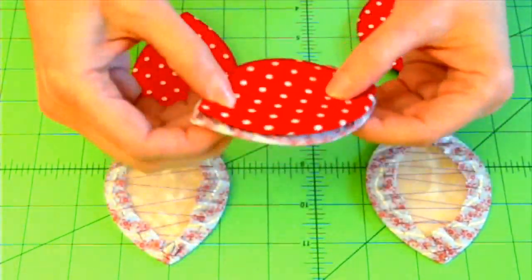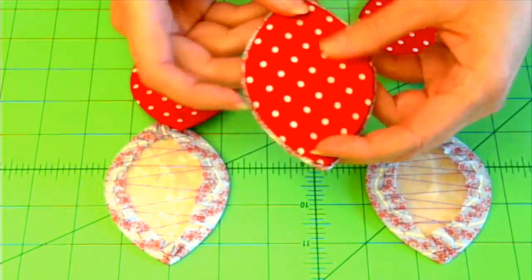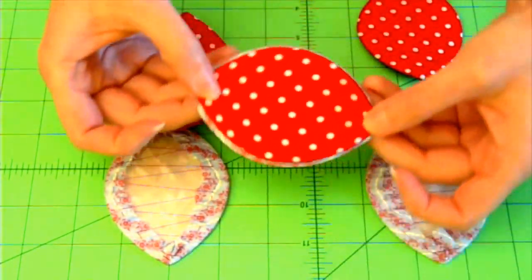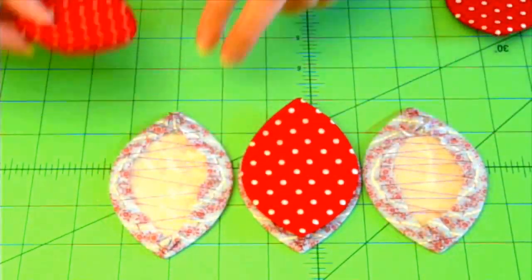The piece that represents the bottom of your clamshell, you're going to want to center the inner part over the outer part. So there's equal amount of blue fabric outside of the red fabric.